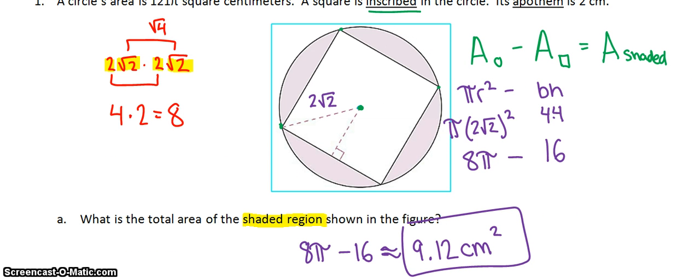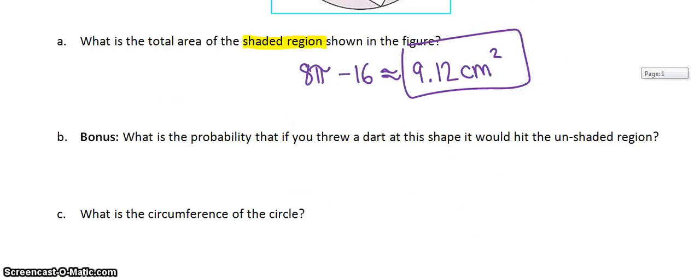In order to find the area of the shaded region, I'll find the area of the hole and subtract the area that I don't want.